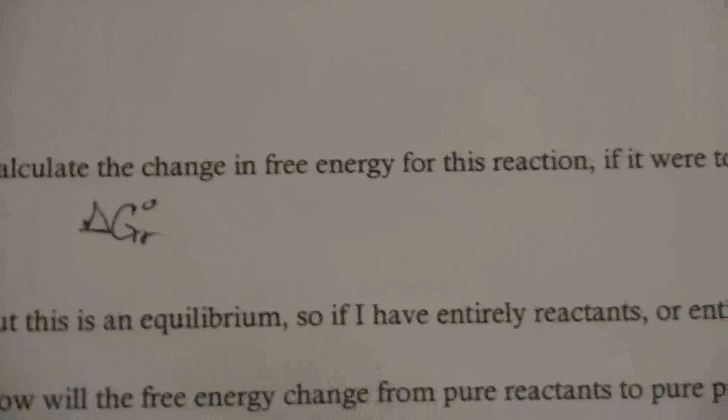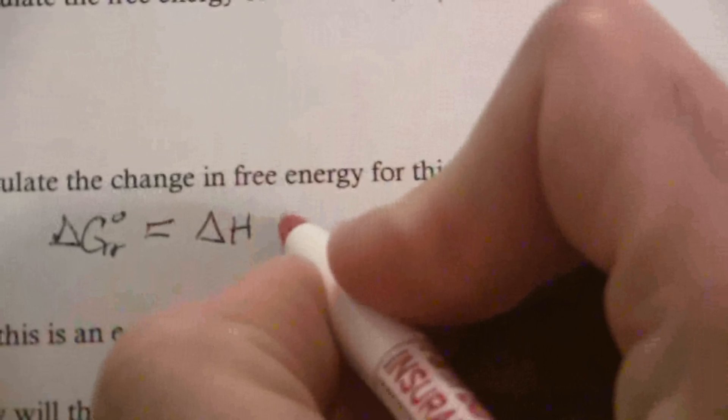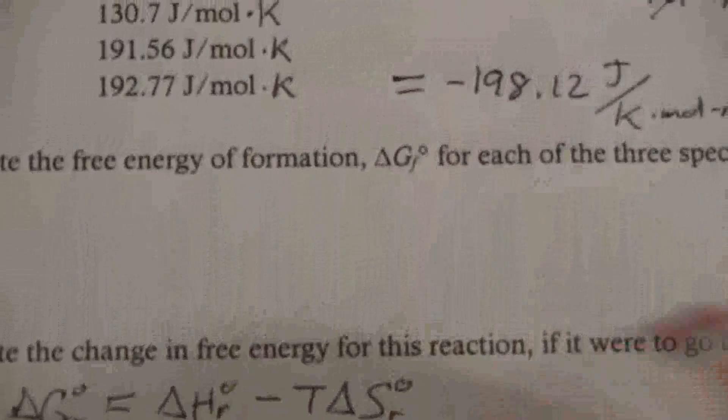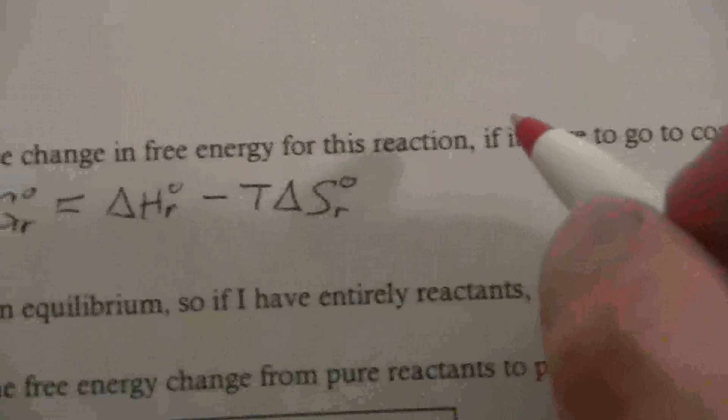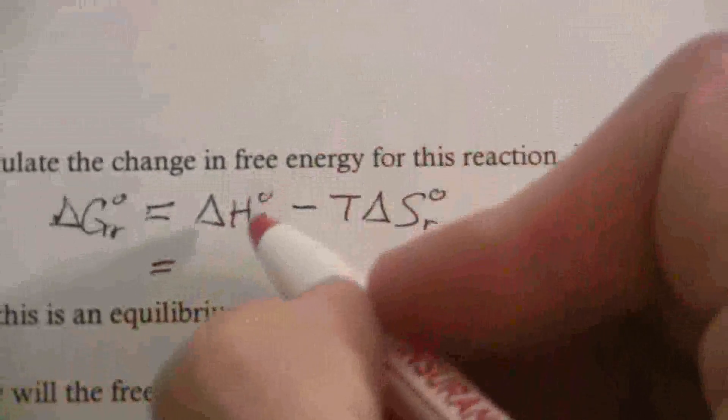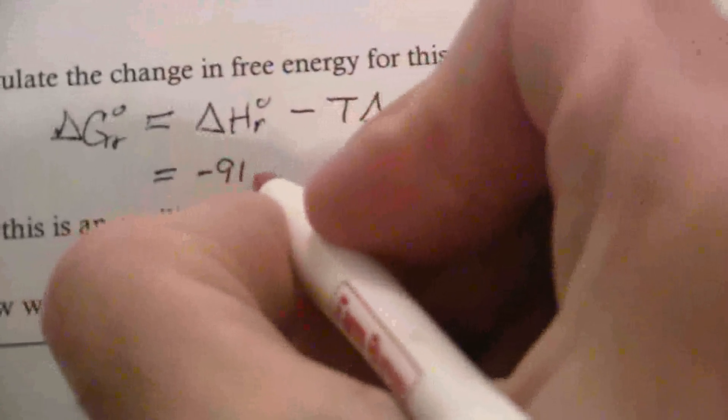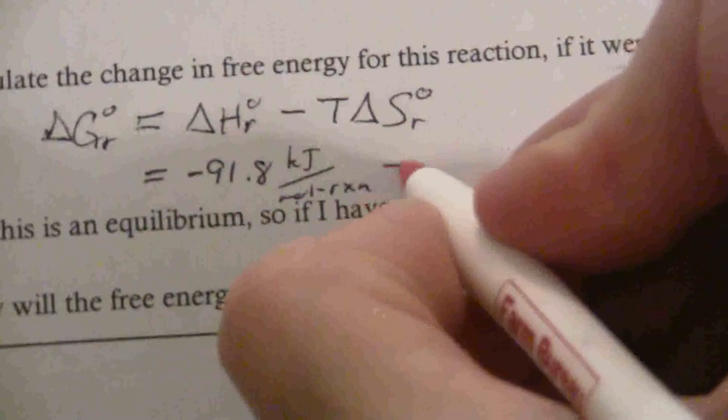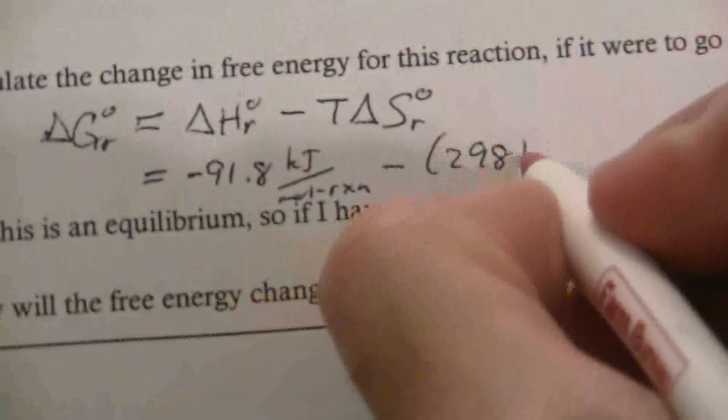So delta G, we know, is equal to the delta H for the reaction minus T delta S for the reaction. So those are the two that I just calculated. I have my temperature. So let's go ahead and put those in. Delta H for this reaction is negative 91.8 kilojoules per mole of the reaction, minus the temperature, which is 298 Kelvin.